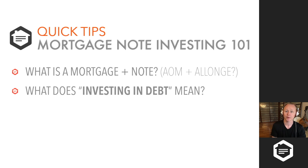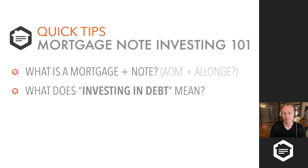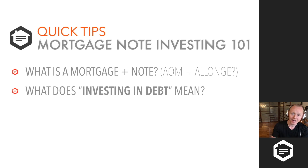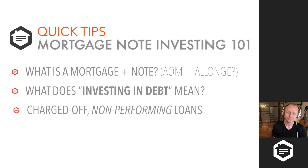The secondary mortgage market is all of the transfers and sales of a loan after the origination process. When we participate in the secondary mortgage market by buying debt, we become the lender — we become the bank.